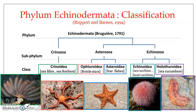Now the subphylum Astrozoa includes two classes: the class Ophiuroidea, which includes brittle stars, basket stars or serpent stars, while Asteroidea includes starfishes.